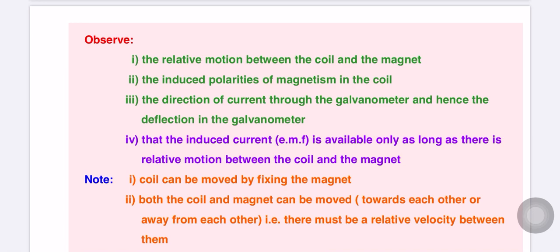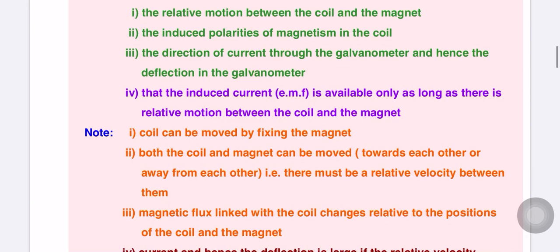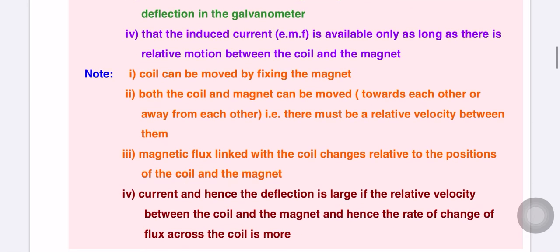The induced current or EMF is available only as long as there is relative motion between the coil and magnet. This means that when the bar magnet and coil have relative motion, there is deflection in the galvanometer. But when they are at rest relative to each other, the deflection in the galvanometer is zero.